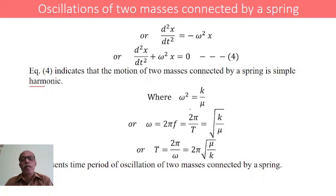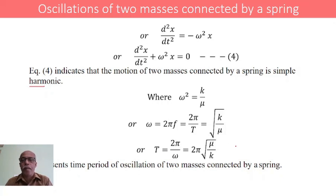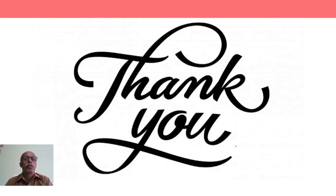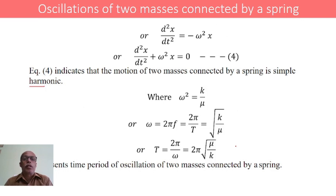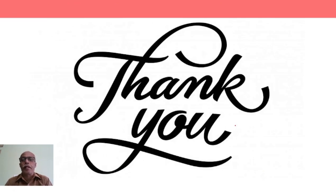Here omega squared equals k by mu, and since omega equals 2 pi f equals 2 pi by T, we get T equals 2 pi times the square root of mu by k. This is the expression for the period of oscillation of two masses connected by a spring. This concludes the discussion on oscillations of two masses connected by a spring.